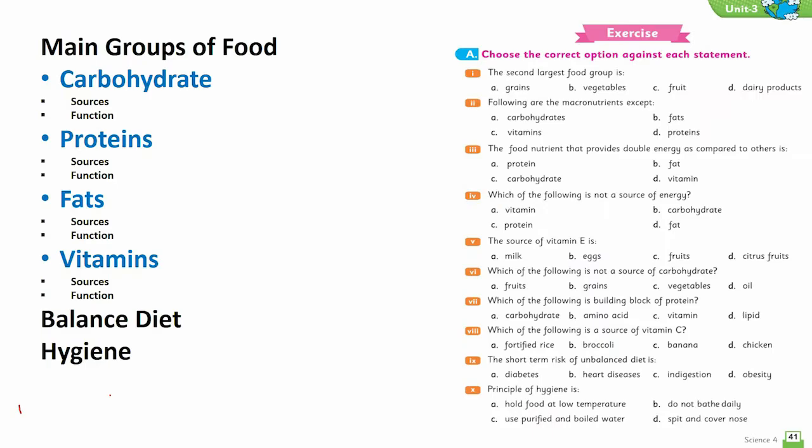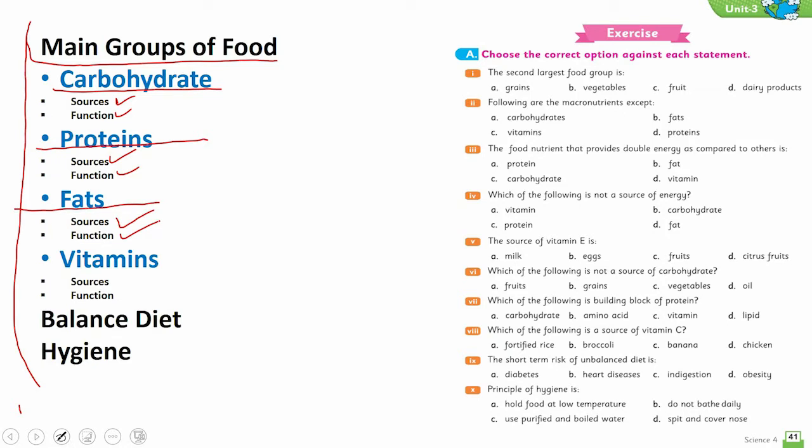Dear students, we finished Chapter Number 3. Let's have a glance on the learning we have made here. First, we studied about main groups of food: carbohydrates, its sources and functions, then protein, its sources and functions, then fats, its sources and functions, then vitamins, its sources and functions.